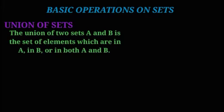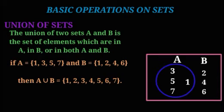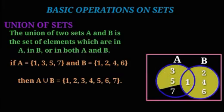Union of sets: the union of two sets A and B is the set of elements which are in A, in B, or in both A and B. For example, if A = {1, 3, 5, 7} and B = {1, 2, 4, 6}, then A union B = {1, 2, 3, 4, 5, 6, 7}.